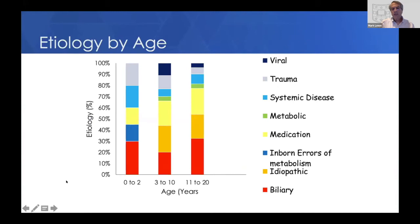The etiology does vary by age. Biliary disease stays fairly steady across ages. Idiopathic is more common in older kids than in kids from 0 to 2. Kids from 0 to 2 are more likely to have trauma or systemic disease as their cause, whereas older kids are more likely to have medication as their cause and less likely to have trauma or systemic disease, although there's a lot of overlap.